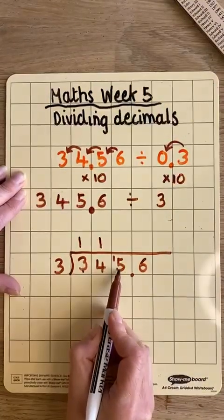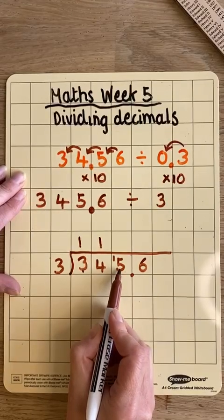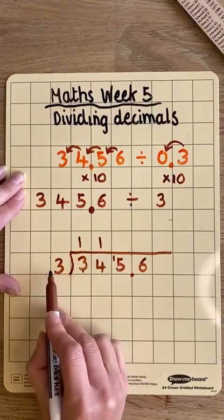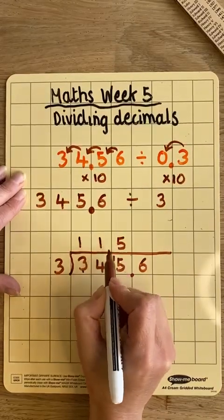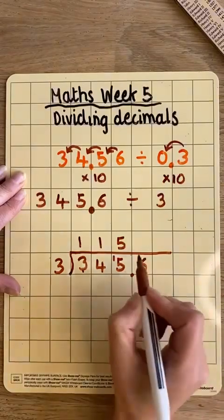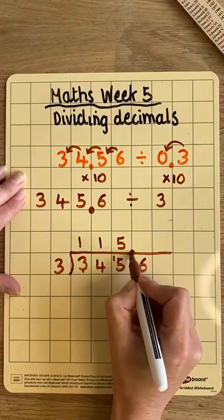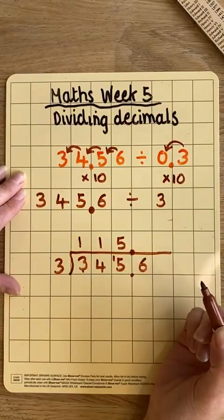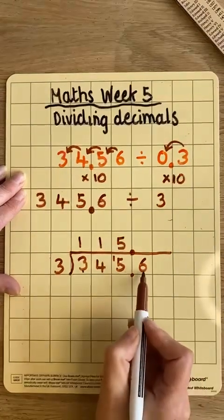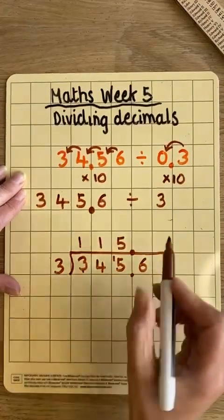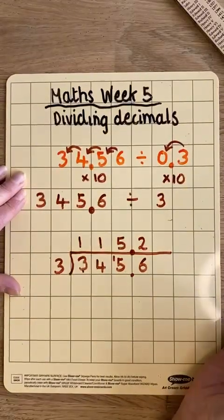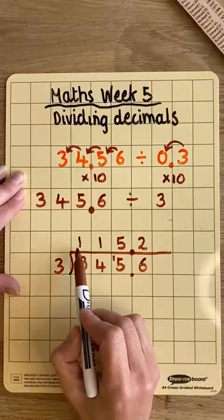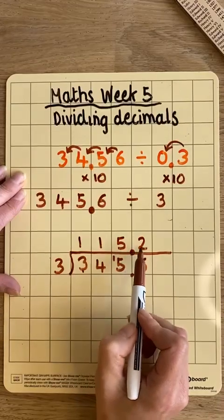That now makes 15 in this column. 15 divided by 3 is 5. Notice how each time my answer goes on top of the bus stop. Here I've got a decimal point, so that goes in the same place in my answer. And then finally, 6 divided by 3 is 2, because I can fit two 3's into a 6. So my answer is 115.2.